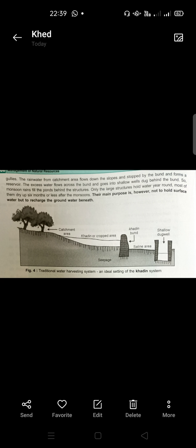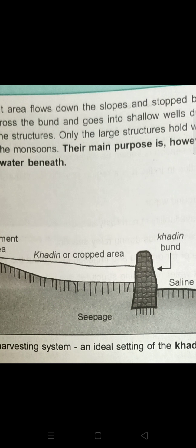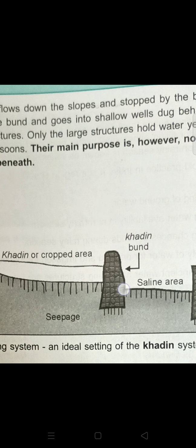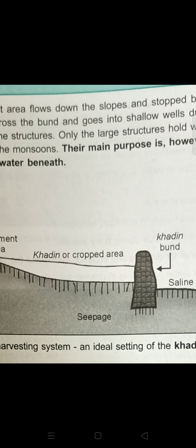Khadin is a largely level terrain in Rajasthan. The water harvesting structures are mainly crescent-shaped earthen embankments, or low straight concrete and rubble check dams built across slopes. A small bund or Khadin is constructed, which works like a dam.